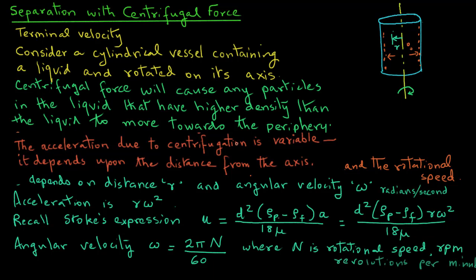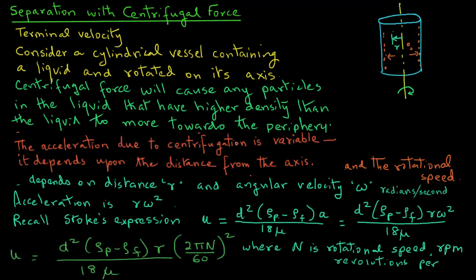So if we substitute omega in our expression, we get the final Stokes expression for a case where we have centrifugal force, and that expression is u equals d square in parentheses rho p, which is density of particles, minus rho f, that's density of the fluid, times r, times 2 pi n over 60 square, divided by 18 mu.